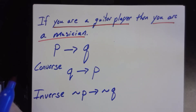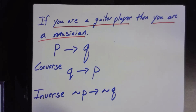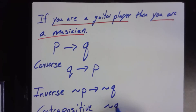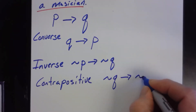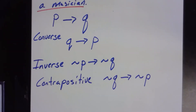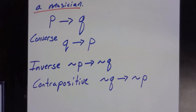Now the big word I mentioned earlier by accident: contrapositive. The contrapositive looks like this: ¬Q → ¬P. The contrapositive is both the converse and the inverse combined — you switch the hypothesis and conclusion AND negate each of them.